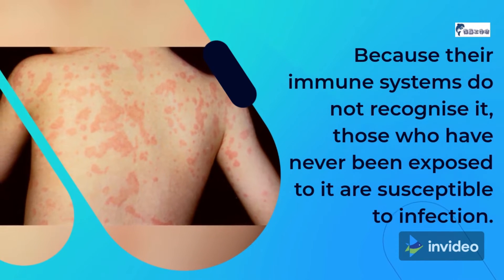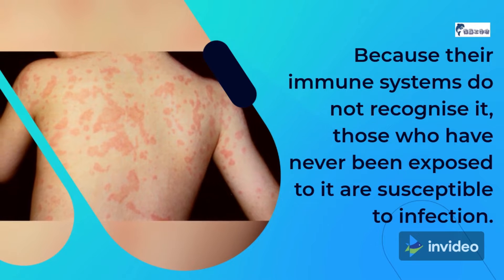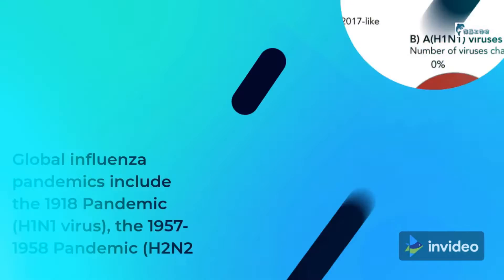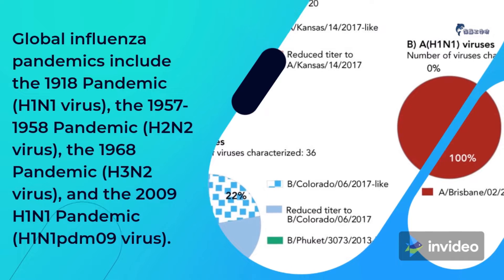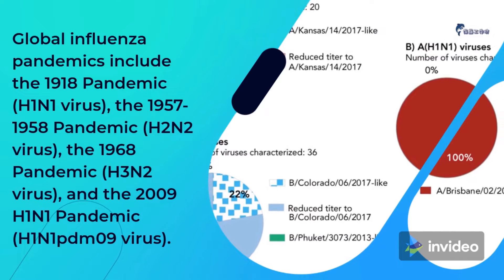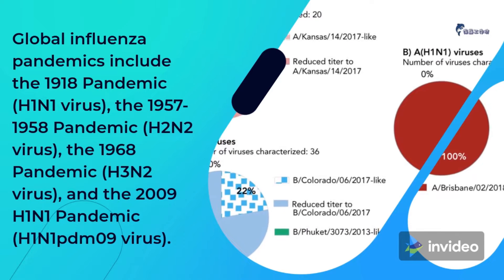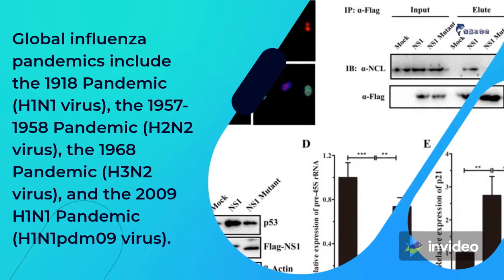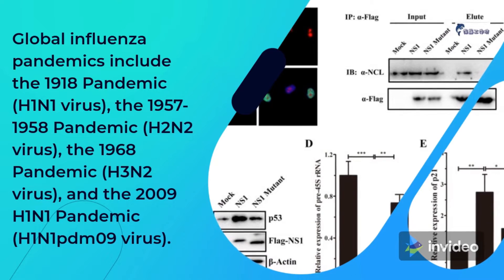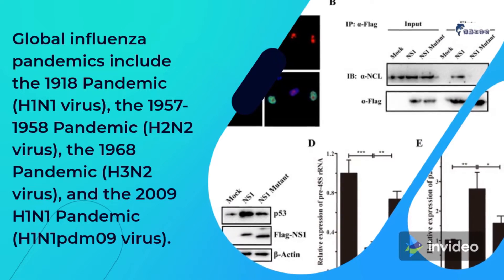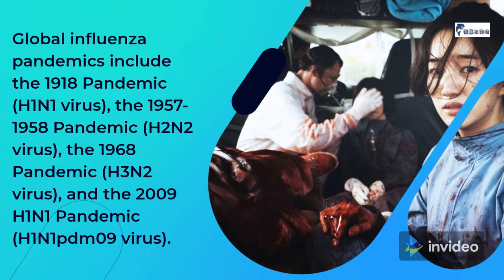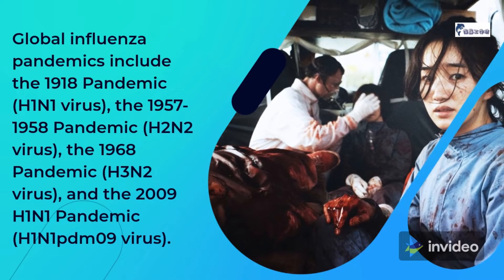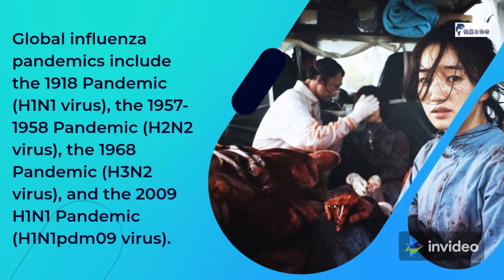Because their immune systems do not recognize it, those who have never been exposed to it are susceptible to infection. Global influenza pandemics include the 1918 pandemic (H1N1 virus), the 1957–1958 pandemic (H2N2 virus), the 1968 pandemic (H3N2 virus), and the 2009 H1N1 pandemic (H1N1 PDM09 virus).